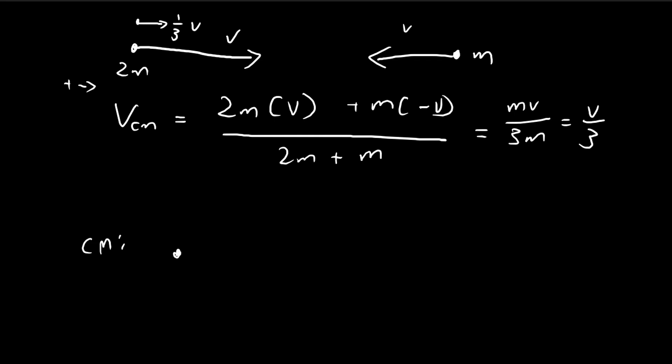So from the perspective of the center of mass, this mass over here is moving to the right at a speed of 2 over 3v. And then this mass over here is coming towards us with a speed of 4 over 3v.